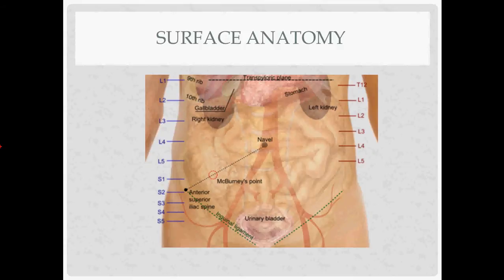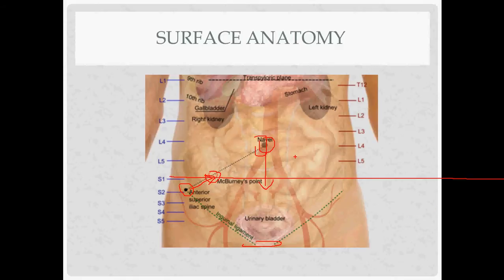For surface anatomy, the arcuate line is located similarly to McBurney's point — using the relationship between the belly button and the anterior superior iliac spine. You've got the pubic symphysis below and the belly button above; go about a third of the way down from the belly button, and that's roughly where the arcuate line is. Remember the belly button is at T10, and the abdominal aorta divides there.